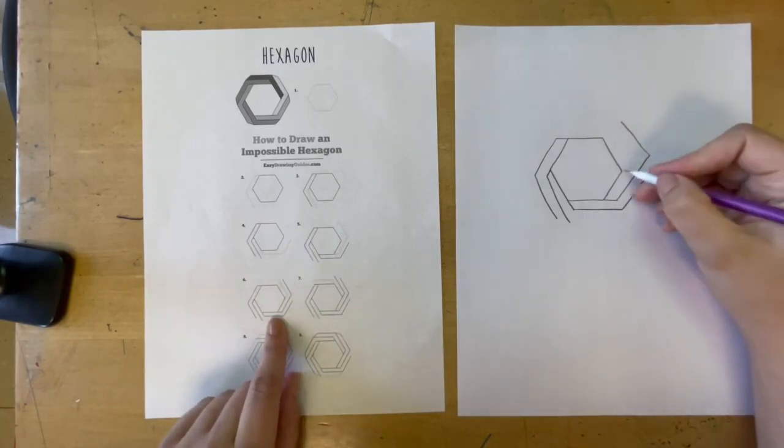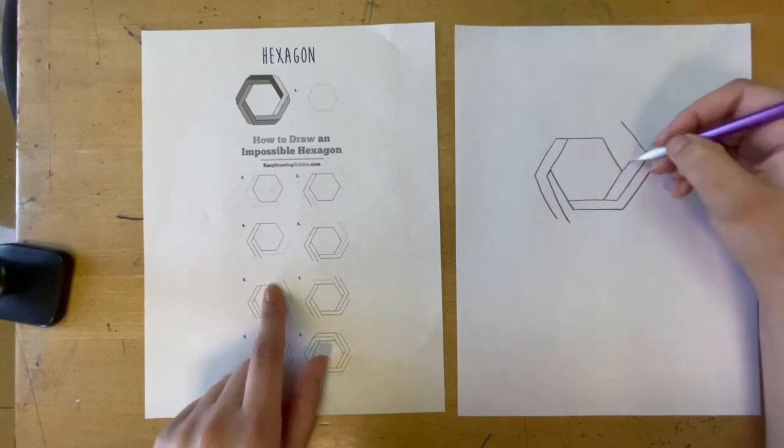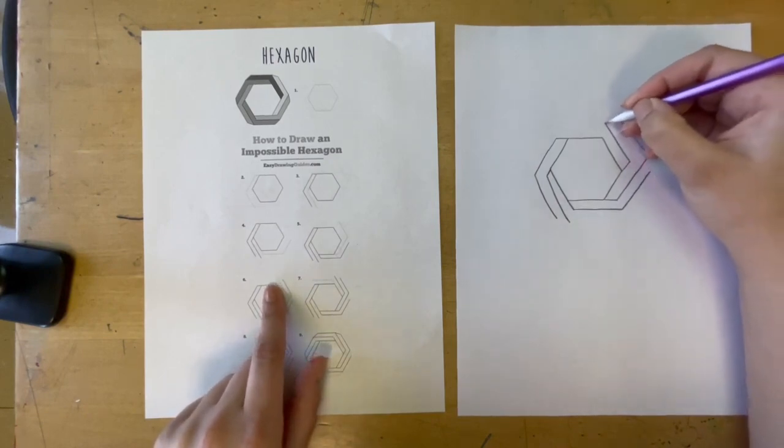Step six, we're extending this line, and then this one looks like it's going way past this one, so I'm going to go all the way up.